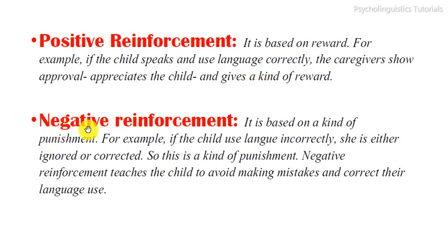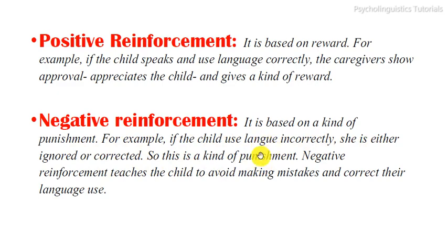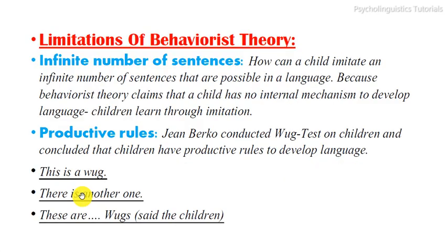Negative reinforcement is based on a kind of punishment. For example, if the child uses language incorrectly, she is either ignored or corrected. Negative reinforcement teaches the child to avoid making mistakes and to correct their language use. Here are the limitations of the behaviorist theory of language acquisition.